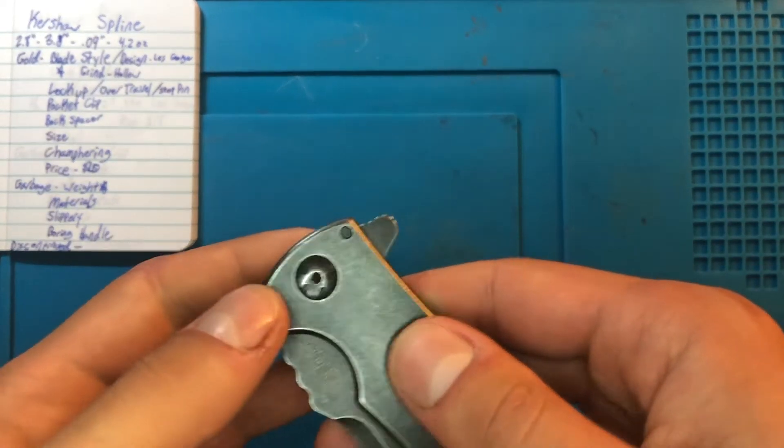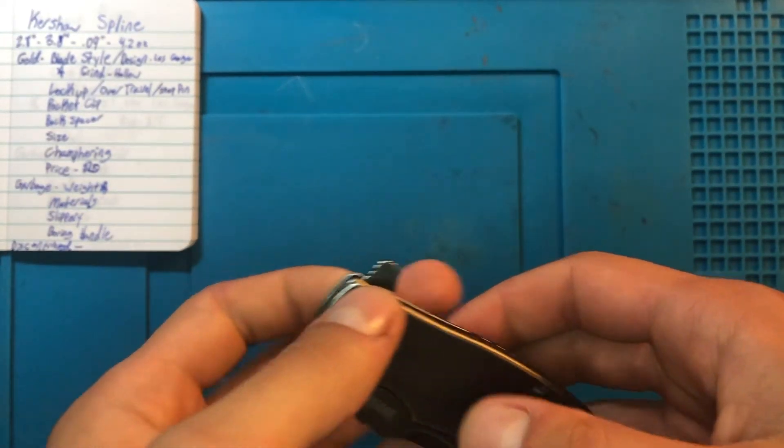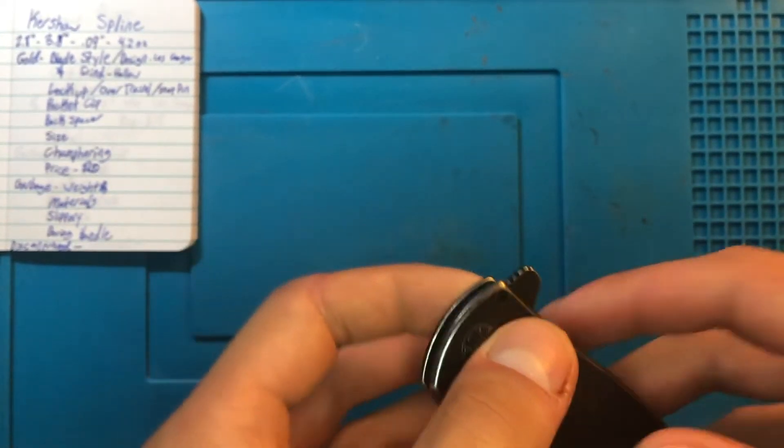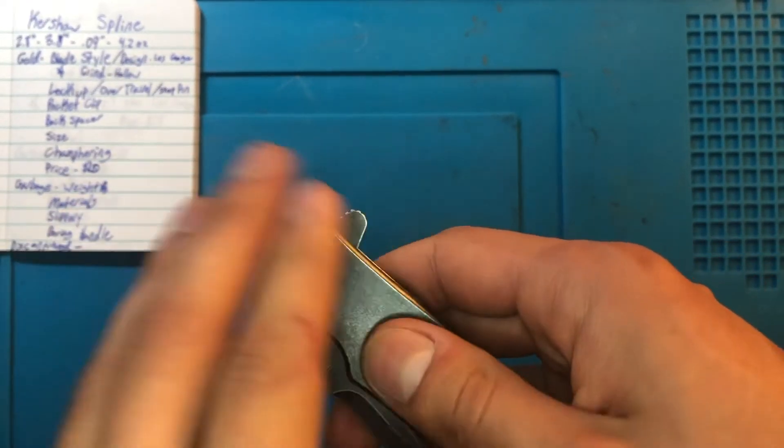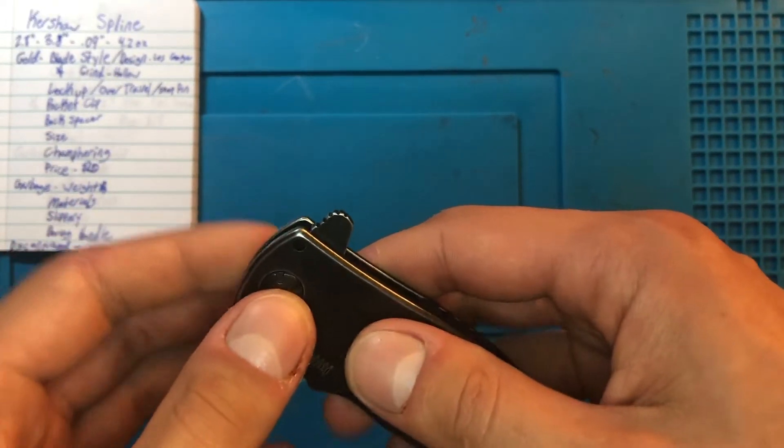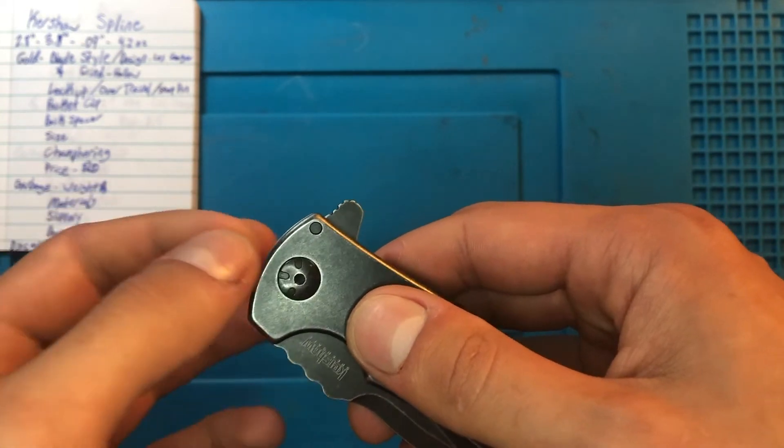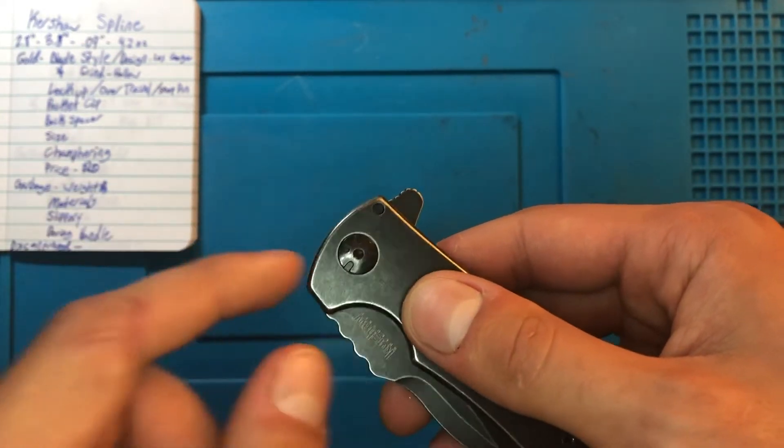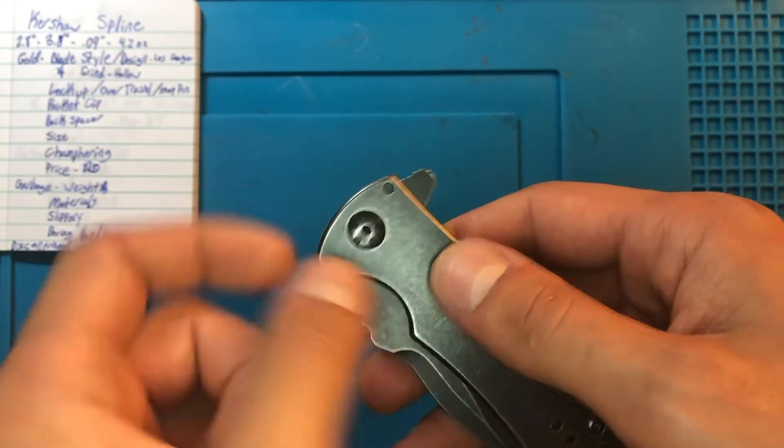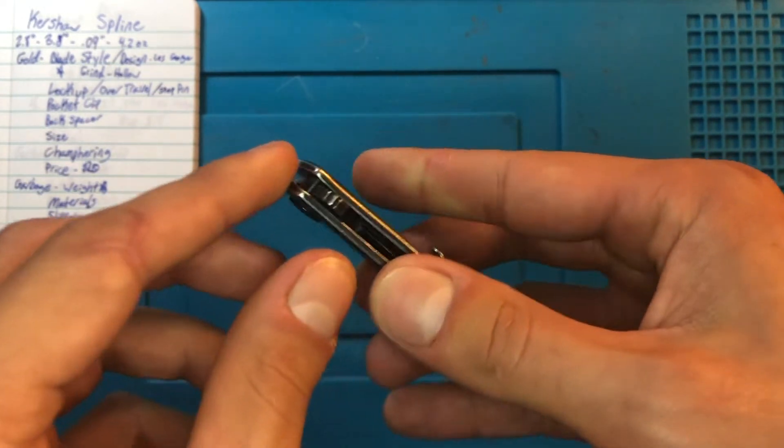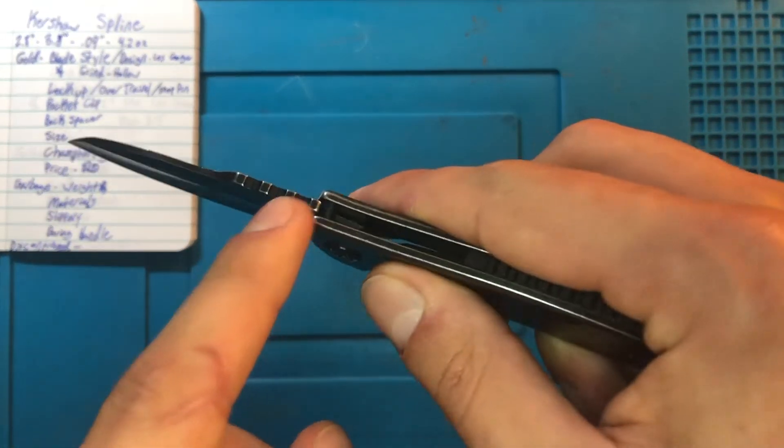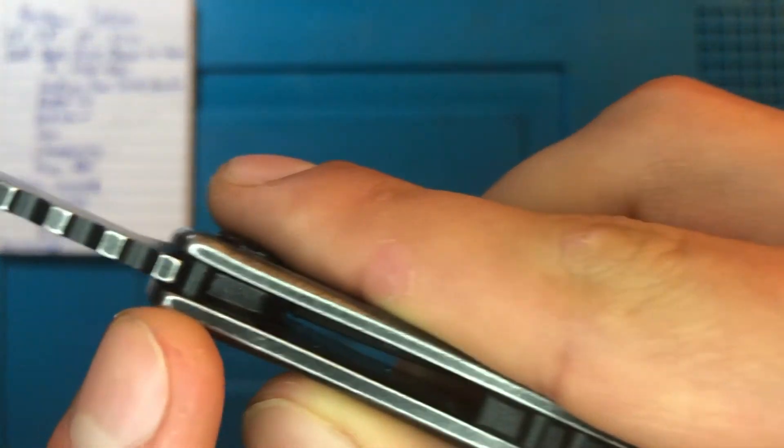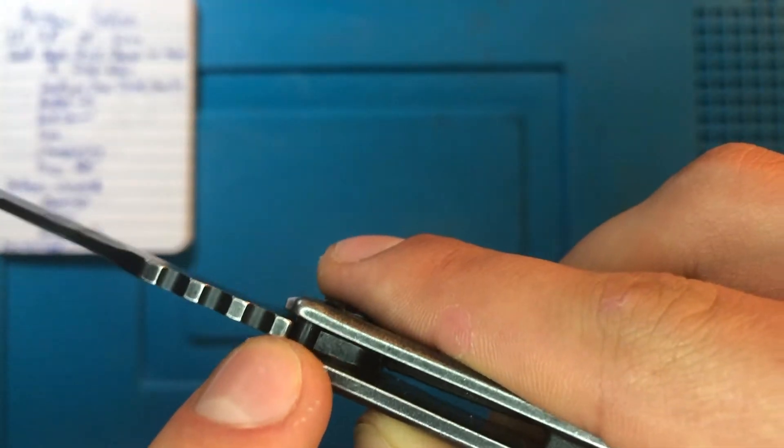Moving on is the stop pin. Now this is something that Kershaw, it feels like in a lot of their budget pieces, especially the assisted opening ones, it feels like they have a tendency to do an internal stop pin, which is a pin right about there inside the blade, as opposed to this one, which is outside of the blade. You can see that right there, that little rod going through.